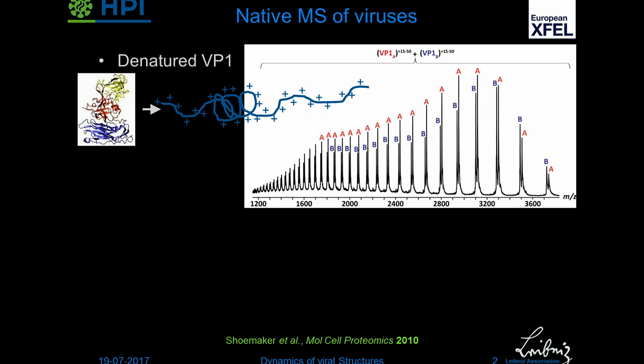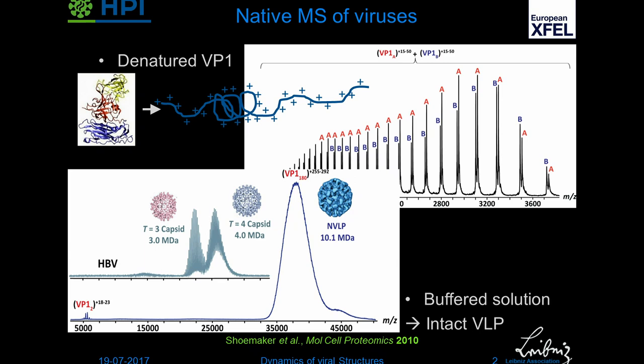Here you have the lower charge states and here the higher ones, and from the adjacent peaks we can determine the mass. This is very nice for accurate mass measurements, but it doesn't tell you anything about the complexes you have. If we take the very same protein and put it into buffered solution — which has to be volatile so we can get rid of the salts in the mass spectrometer — then we see a very different mass spectrum. The mass-to-charge ratio is now an order of magnitude higher and we're looking at the intact virus-like particles, which are in this case T3 particles.